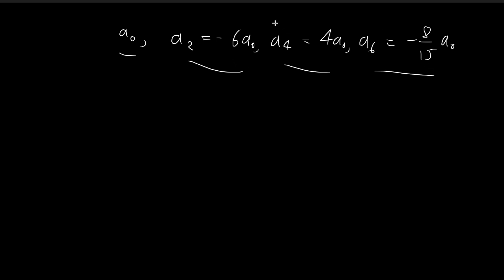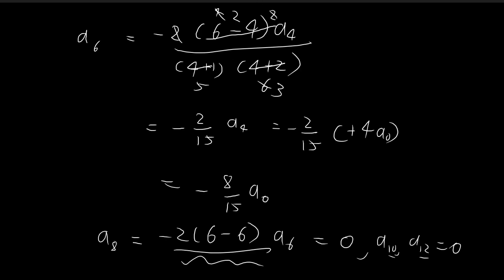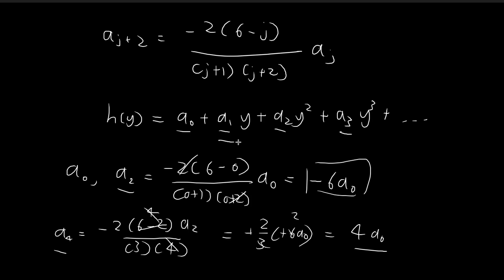For the terms with odd subscripts — A1, A3, A5, A7 — they are all going to be equal to 0. Since we've chosen the recursion formula to stop at j equals 6 for even terms, there is no way to stop the recursion for odd subscripts. The only way for H of y to be normalizable is for all odd-subscript terms to equal 0. So A1, A3, and A5 are all zero.